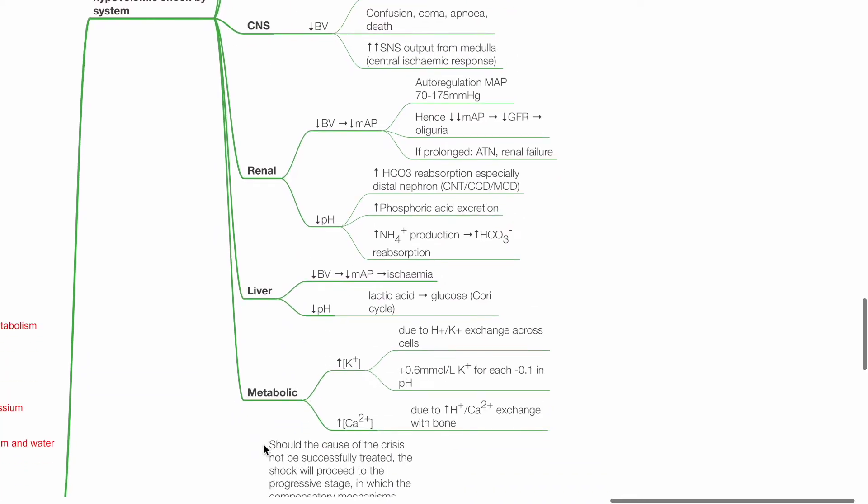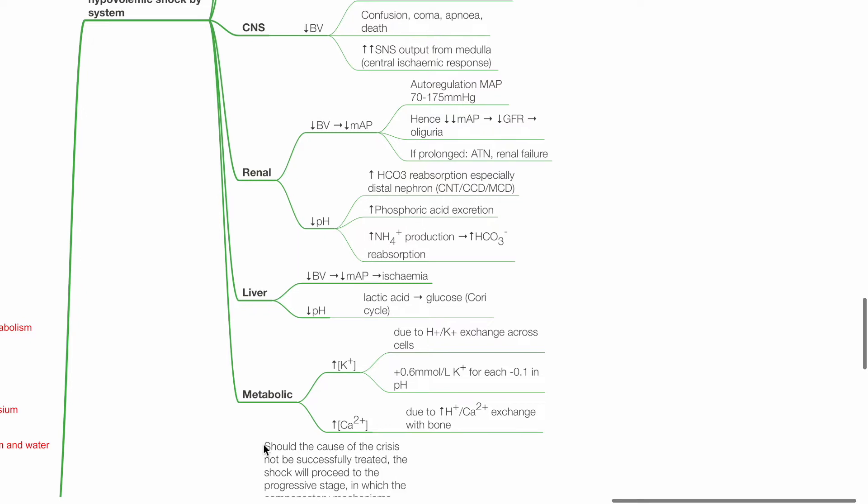For the kidneys, reduced blood volume results in reduced perfusion pressure. Autoregulation fails when MAP falls below 70 mmHg. Hence, reduced MAP results in reduced GFR and oliguria. If hypotension is prolonged, there is ATN and renal failure. Acidosis increases bicarbonate reabsorption especially at the distal nephron, increased phosphoric acid excretion and increased NH4 production, which results in increased bicarbonate reabsorption.